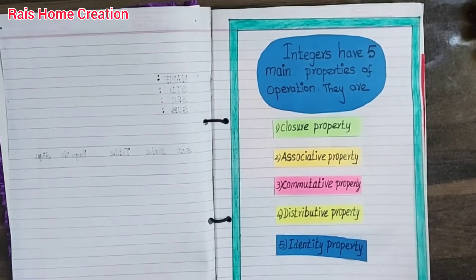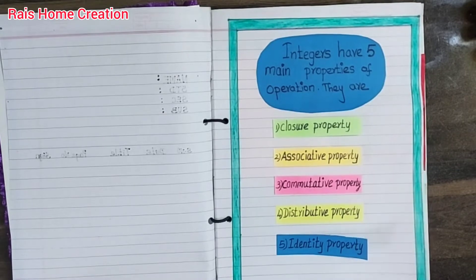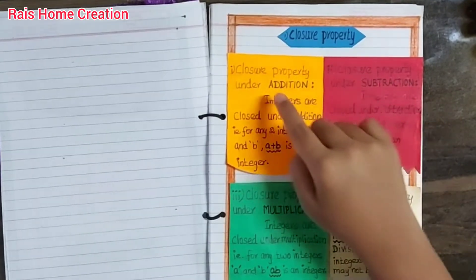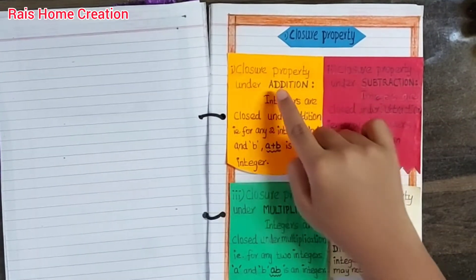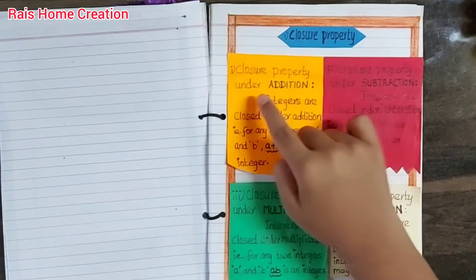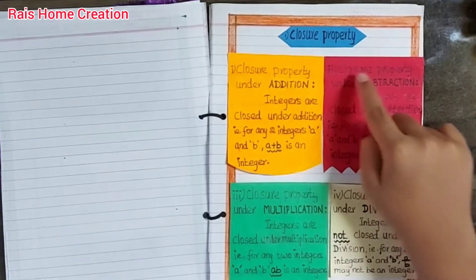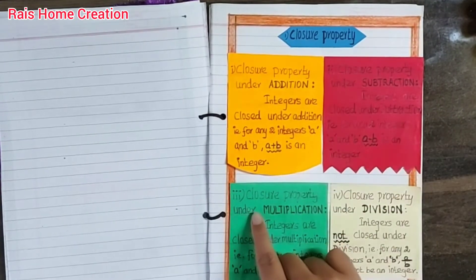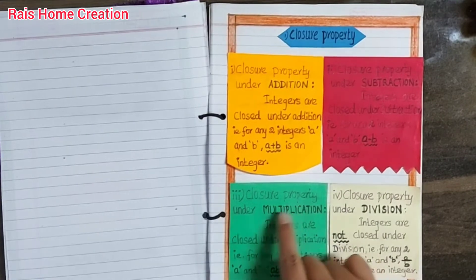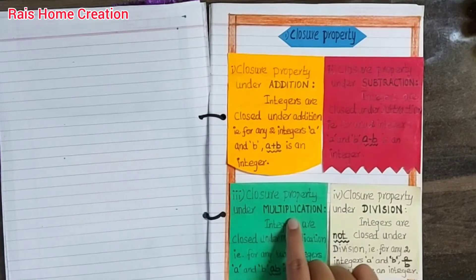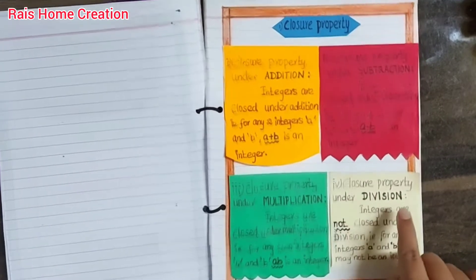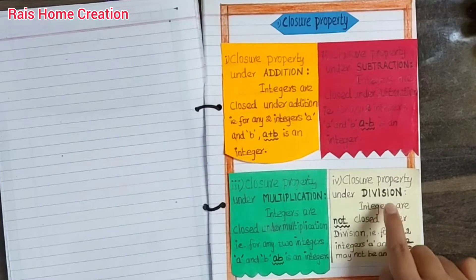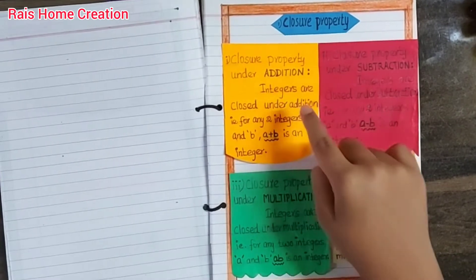The next page covers closure property. Closure property consists of: number 1, closure property under addition; number 2, closure property under subtraction; number 3, closure property under multiplication; number 4, closure property under division.